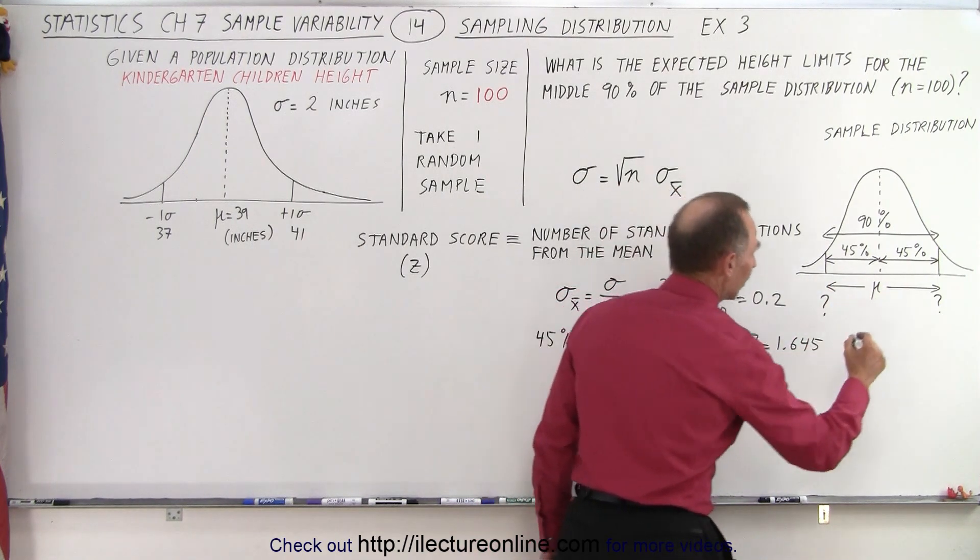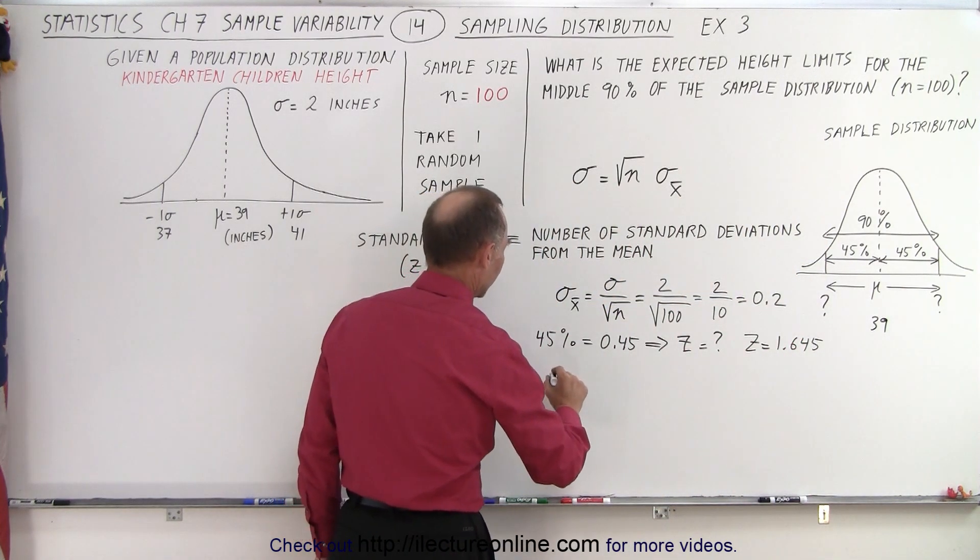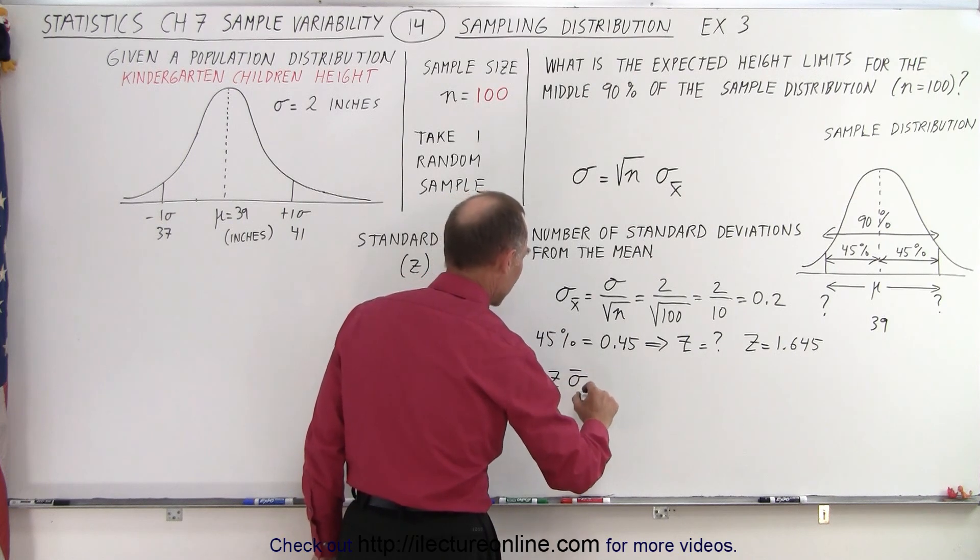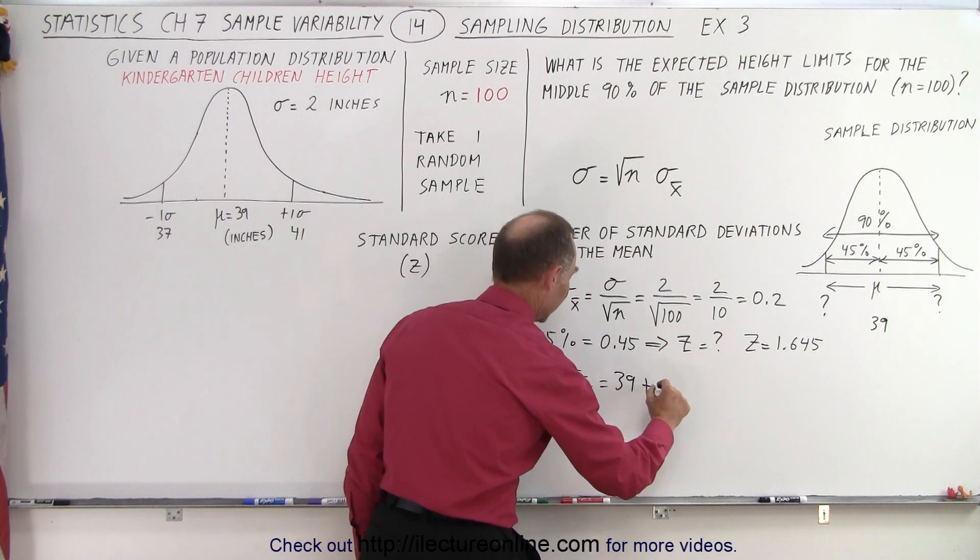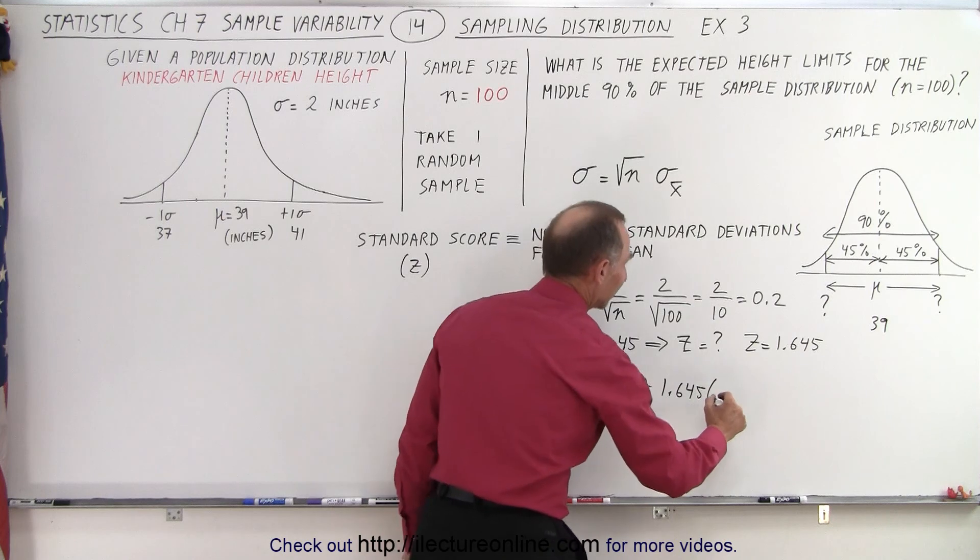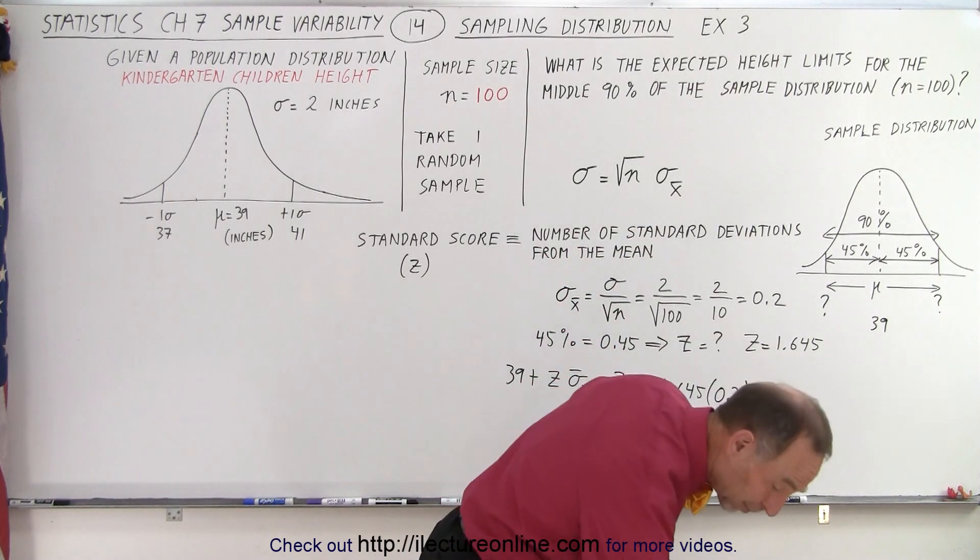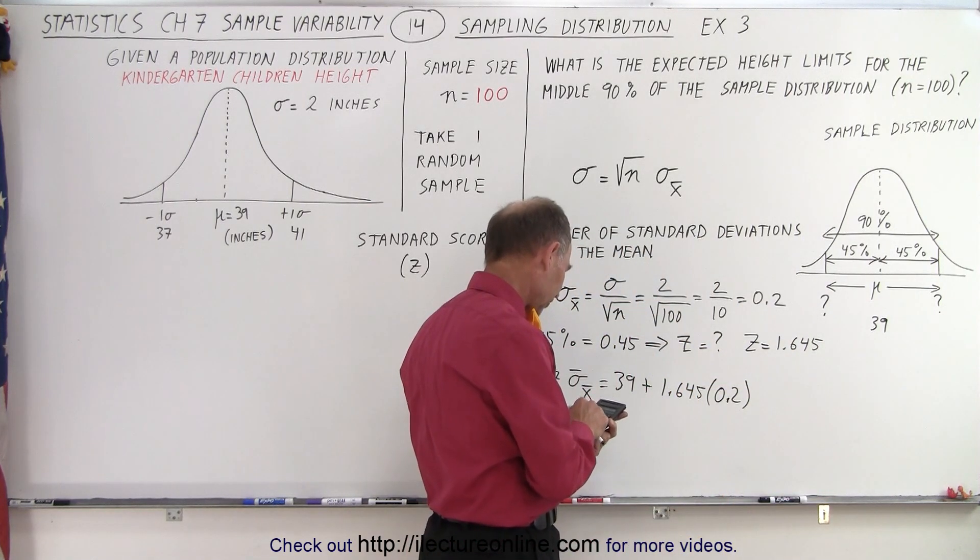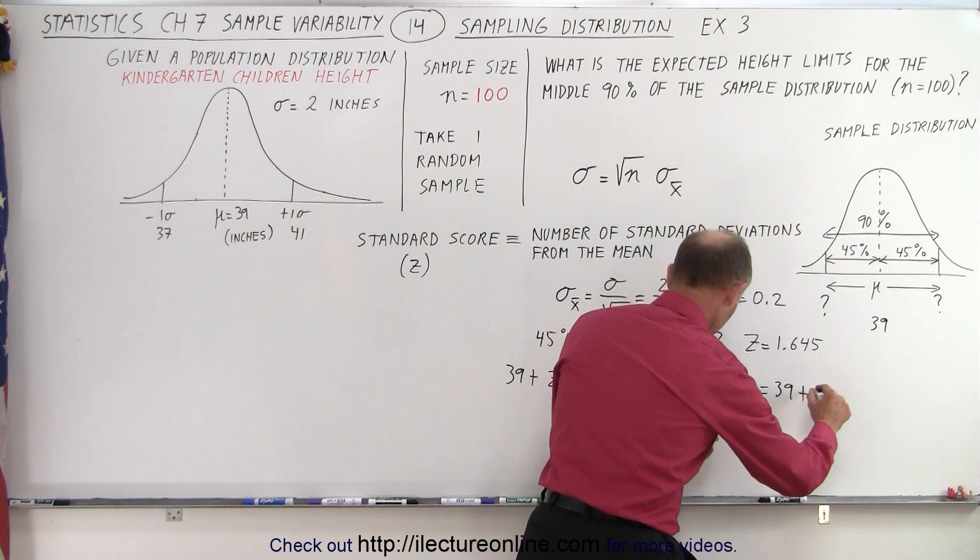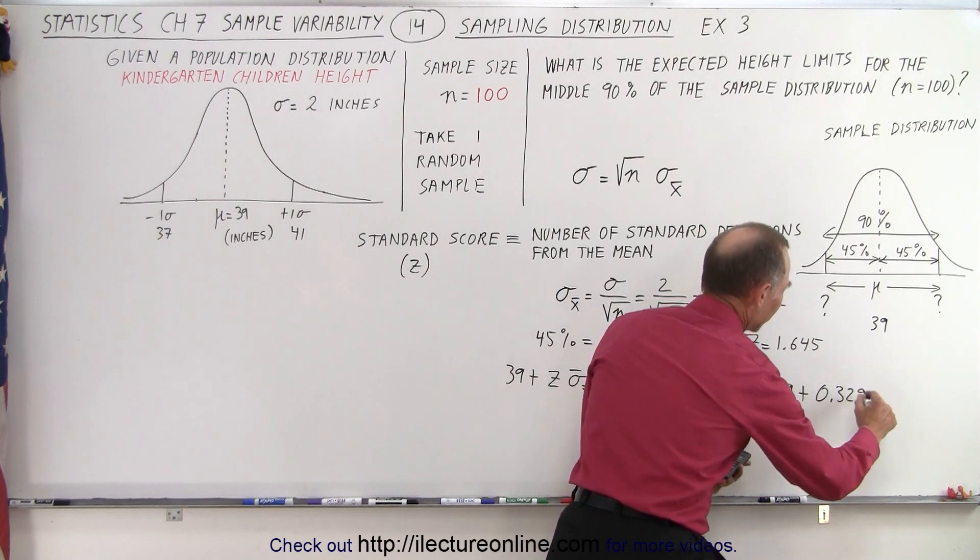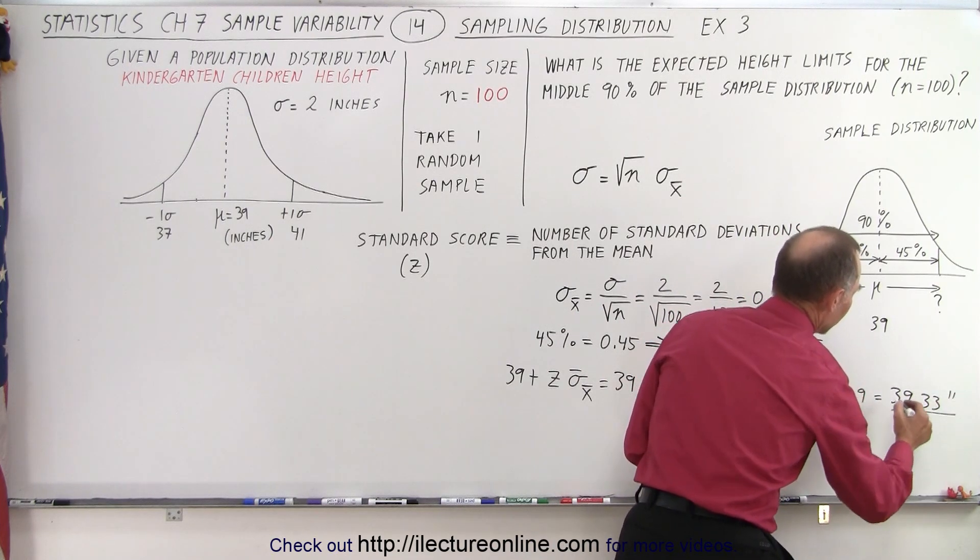So if the mean is 39, so we get 39 plus z times the standard deviation of our sample distribution which is equal to 39 plus 1.645 times 0.2. Well, let's just make it easier so we have 1.645 times 0.2, so we get 39 plus 0.329, that's essentially 0.33, so it would be equal to 39.33 inches. So that would be on the high limit, 39.33 inches.